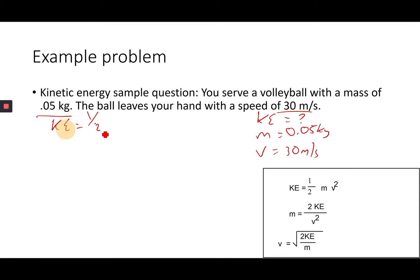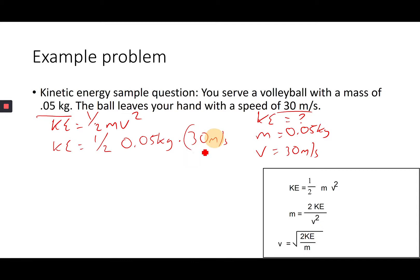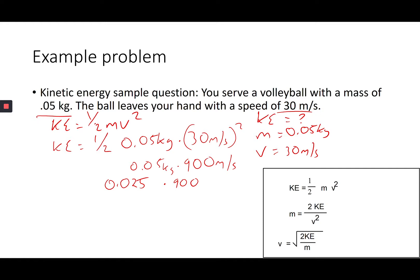The formula is kinetic energy equals one-half mv squared. So: one-half times 0.05 kilograms times 30 meters per second squared. 30 times 30 is 900. Then 0.5 times 0.05 is 0.025, times 900 gives us 22.5 joules of energy — a very small amount, but it does have energy.